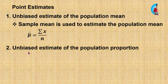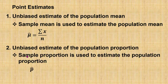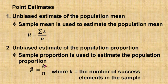The second one is the unbiased estimate of the population proportion, which is denoted as p hat. p hat is also known as the sample proportion. We use the sample proportion to estimate the population proportion. Since sample proportion is equal to k over n, where k is the number of success elements in the sample and n is the sample size, therefore the unbiased estimate of the population proportion is equal to k over n.